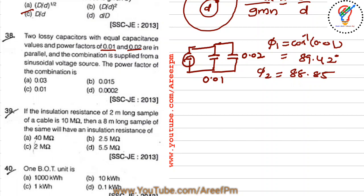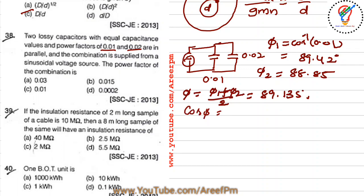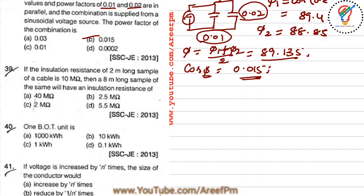We take the average value: average phi = (phi_1 + phi_2) / 2 = 89.135°. The combined power factor cos(phi) = 0.015. Or simply, taking the average of the power factors: (0.01 + 0.02) / 2 = 0.015 is the power factor for this question.